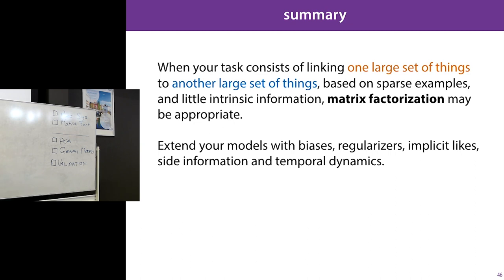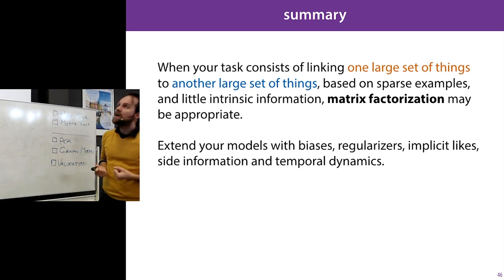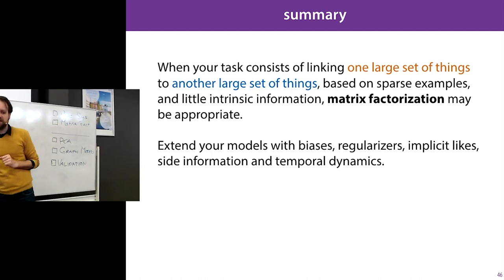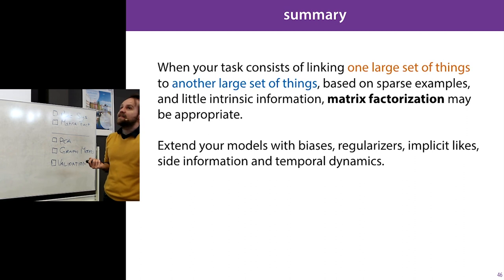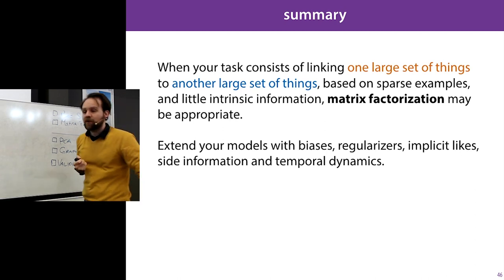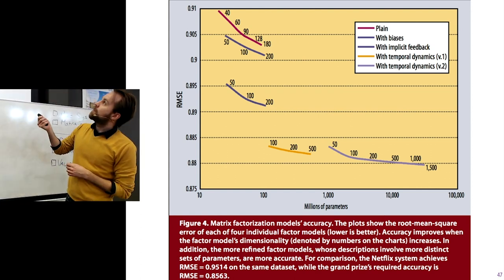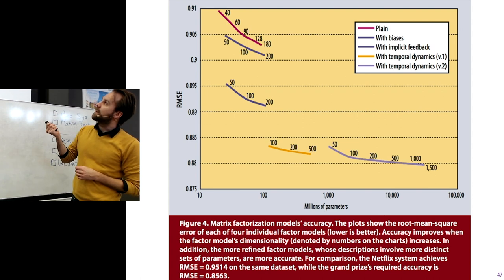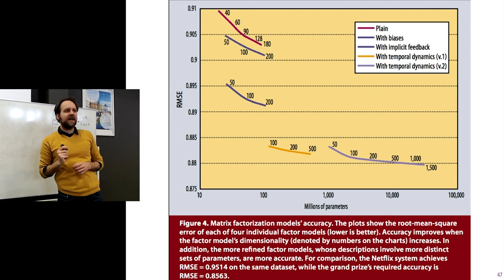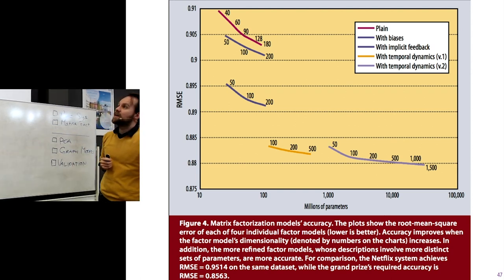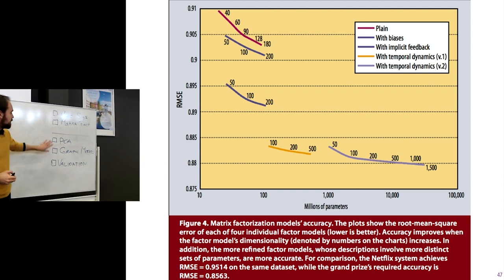To wrap up recommender systems: if you have two sets of entities linked by associations, about which you don't know many useful things, and the links express the most interesting information — think recommender systems and matrix factorization. Then consider all these improvements: user/movie biases, implicit likes, side information, and temporal dynamics. Here are the different impacts of these features; the paper came out just before they actually won the Netflix Prize and collected the million dollars.